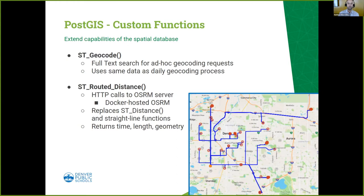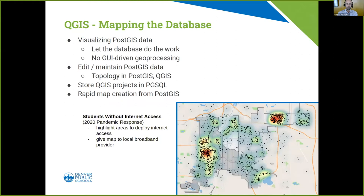We can route 94,000 students from their home to their attending school and it takes about 14 seconds to do all those kids. We do a lot of transportation analysis for bus routing and create transportation matrices of students and bus stops. The st_routed_distance function returns the time of the route, the length of the route, and of course the geometry. A picture in DBeaver shows a mock-up of students, the routes, and the school they're all being routed to — three types of geometry in the spatial data viewer.